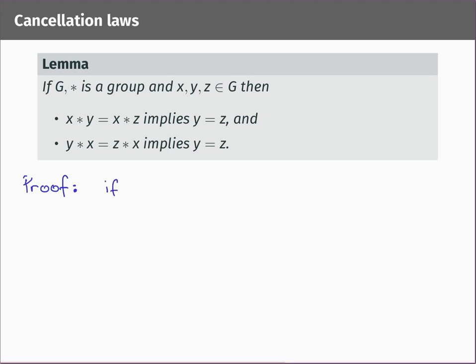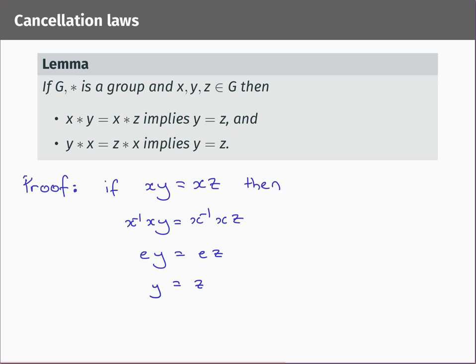Here's the proof. If xy equals xz, we multiply on the left by x-inverse. We don't need brackets because the operation in a group is associative. We can do the x-inverse times x product first, giving identity times y equals identity times z. So y equals z. That proves the left cancellation law, and you can prove the right cancellation law in exactly the same way by multiplying on the right by x-inverse.